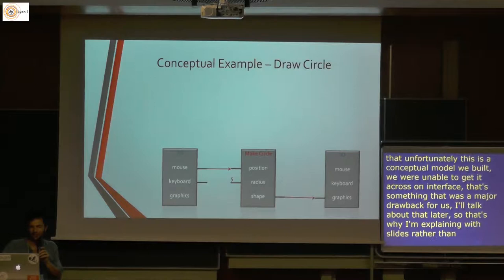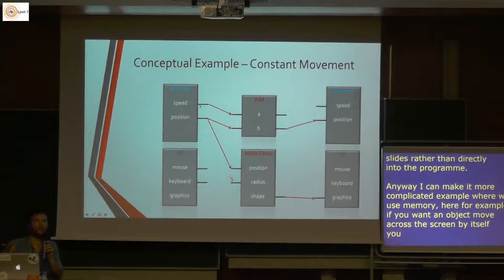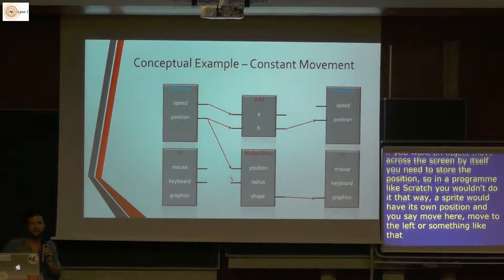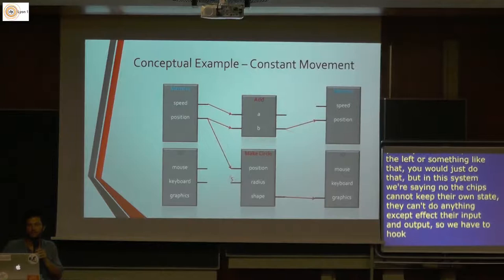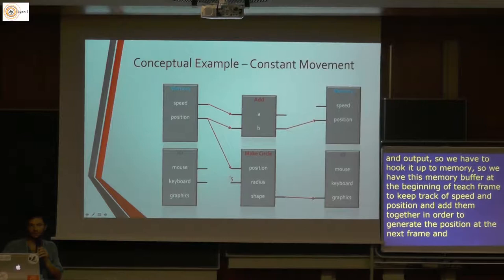For a more interesting example: if I hook the chip up to the input buffer, I can take the position of the mouse, send it as the position of the circle, and now draw it on screen — so you'd see a circle following the mouse. For a more complicated example, if you want an object to move across the screen by itself, you need to store its position. Unlike Scratch where a sprite just has its own position, in this system chips cannot keep their own state. So we hook it up to a memory buffer that at the beginning of each frame keeps track of the speed and position, adds them together to generate the next frame's position, and that position gets drawn.